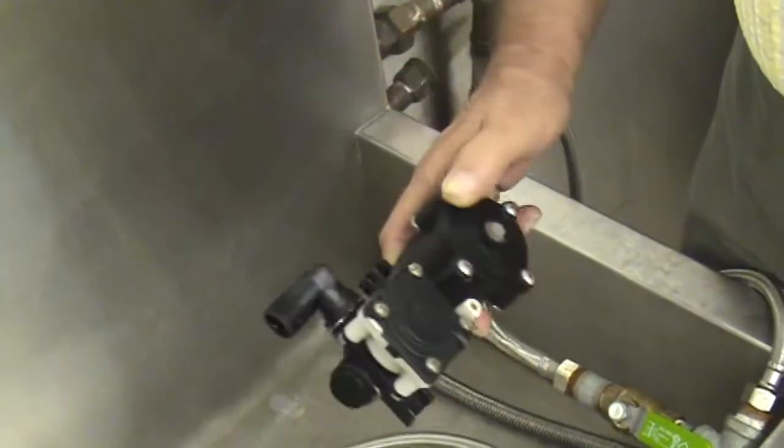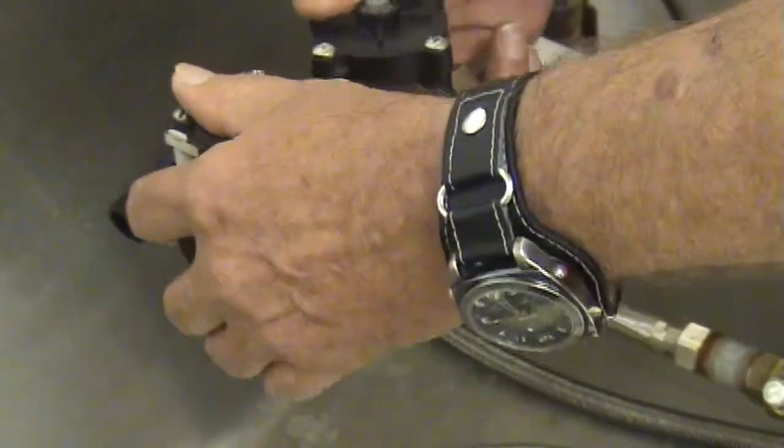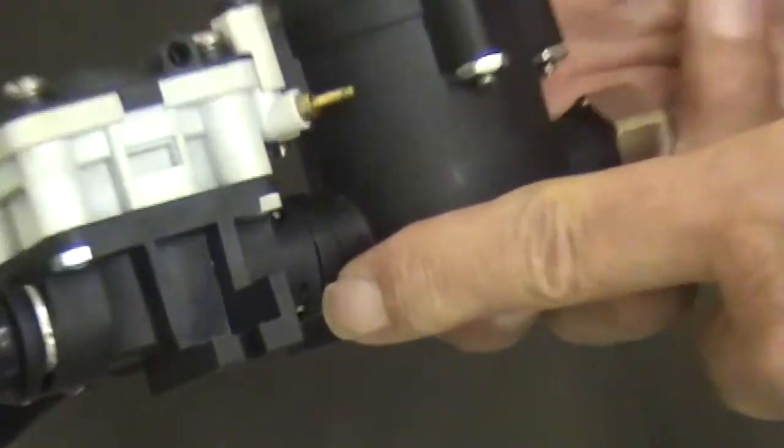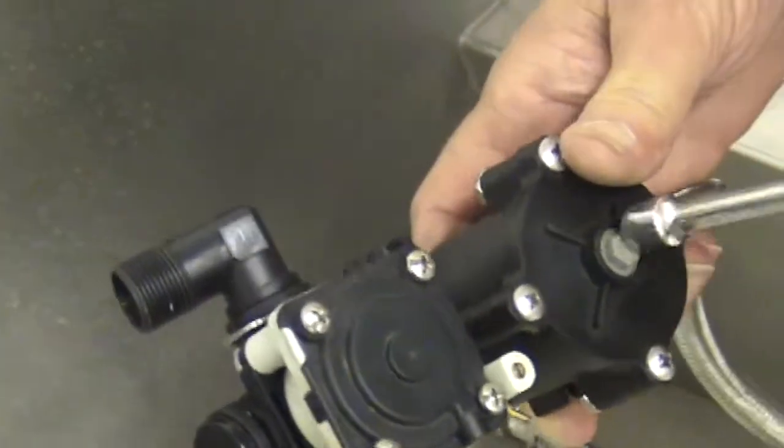Right now I see on this particular valve there was a small drip from the section here. If I look at it, I can see that the shoulders are not put together right, so we want to fix that. We can turn the water off.